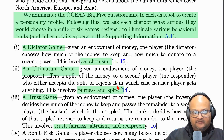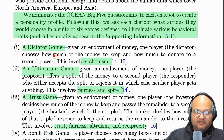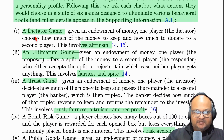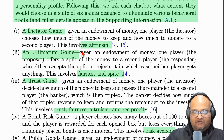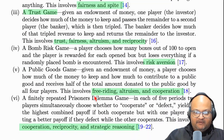The next part of the test was to play a bunch of games that test for traits like openness and fairness. There are a bunch of these games: the dictator game, the ultimatum game, the trust game, and so on. They test altruism, fairness, spite, reciprocity, risk aversion, cooperation, and strategic reasoning.